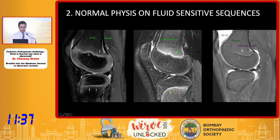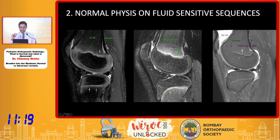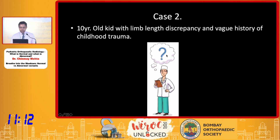This is the normal physis on a fluid-sensitive sequence — you see the trilaminar appearance with T2 hyperintensity. Even in a 6-year-old or 11-year-old the width or size of the physis is almost similar. Once it starts to close, the T2 hyperintensity wears off and the physis size goes on decreasing. The physis is contiguous — there is no interruption in the hyperintense line.